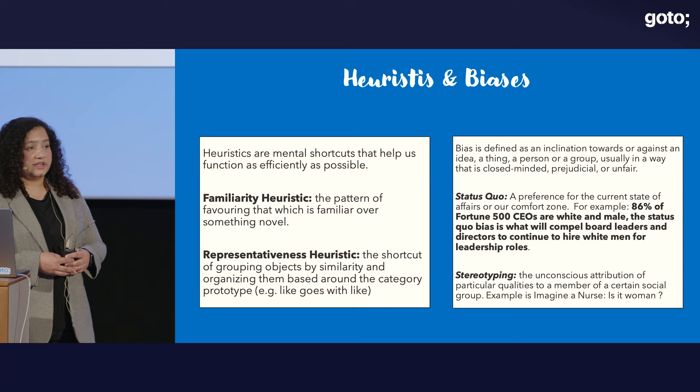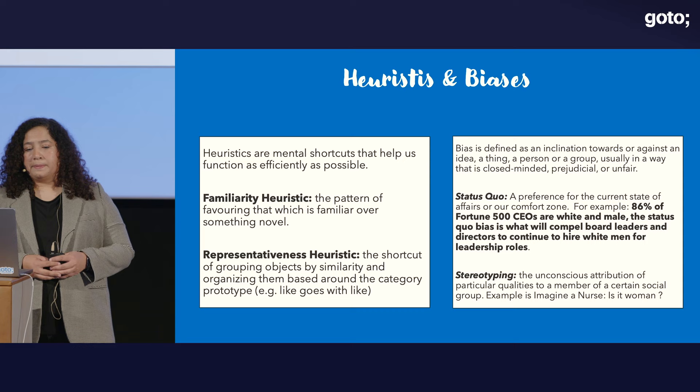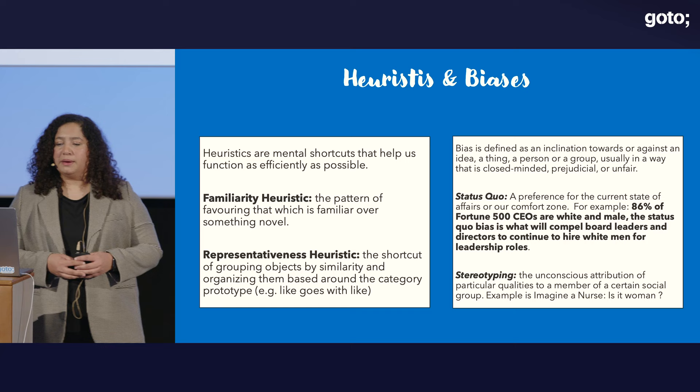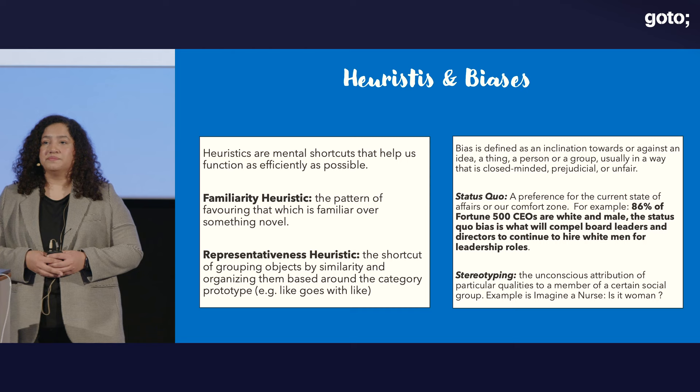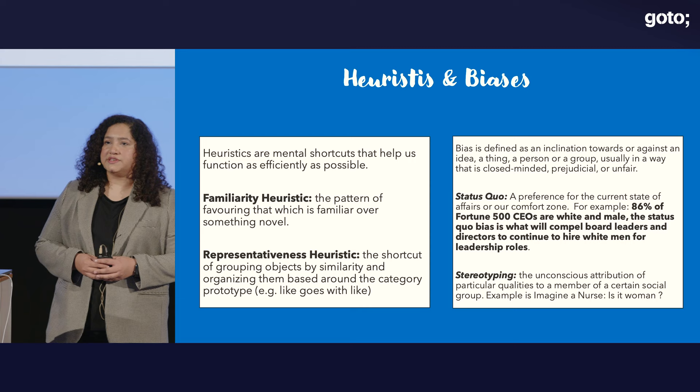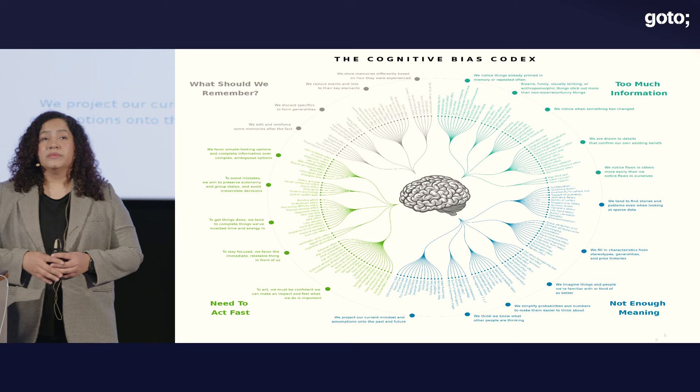Similarly, when talking about representativeness heuristics, it can lead to stereotyping — the unconscious attribution of particular qualities to a member of a certain social group. For example, imagine a nurse. What comes to mind? Is it a woman? Why? Because this is a stereotype, and it has been produced because of these heuristics — the ability of our brain to simplify things.